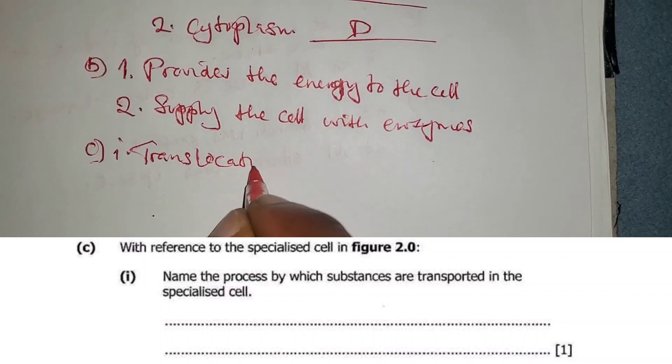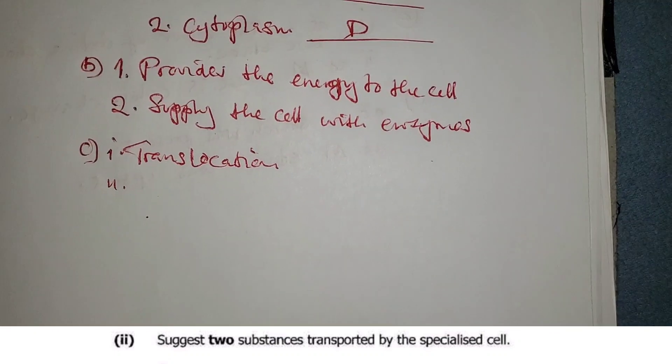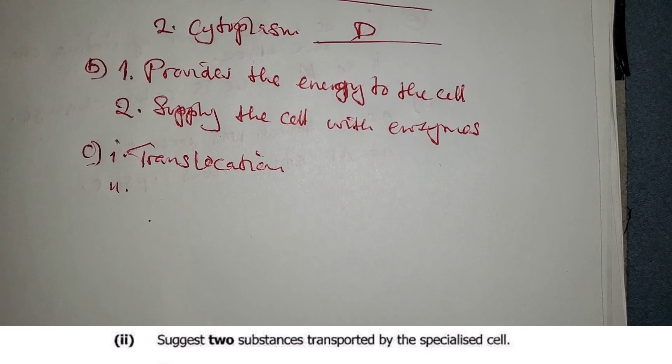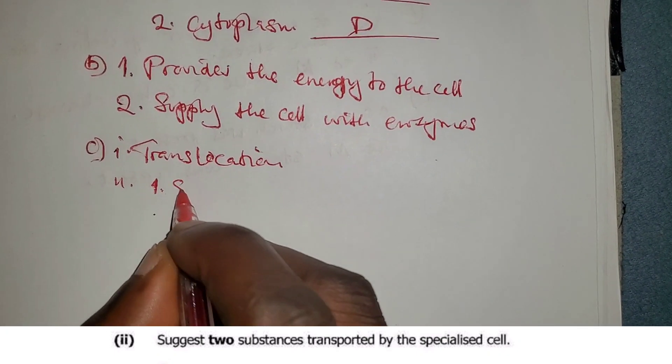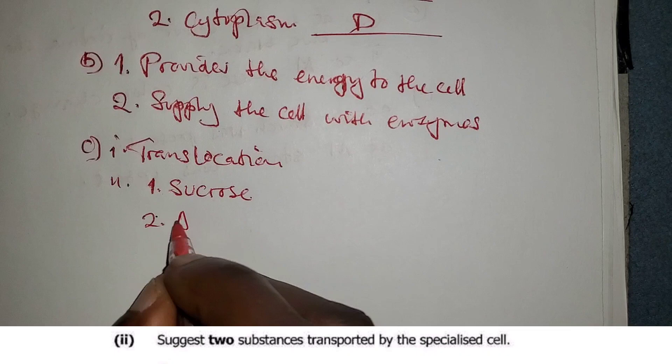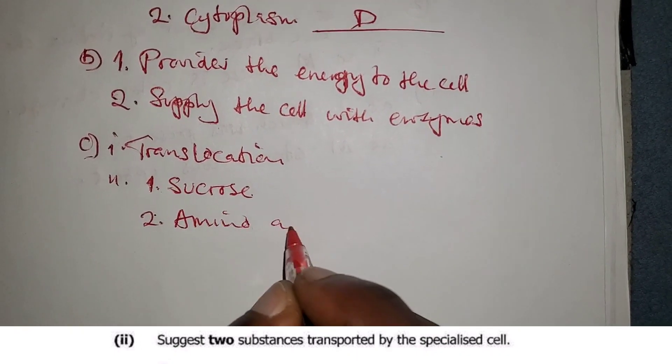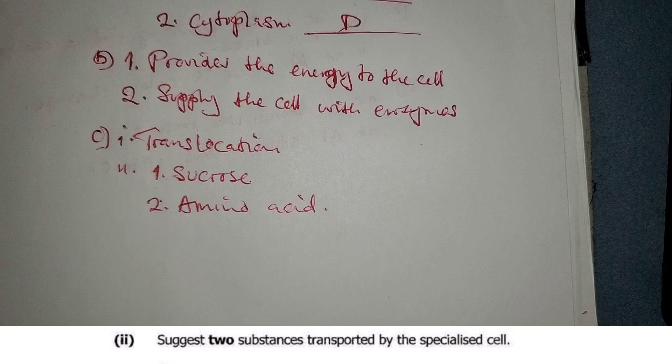Number two: Name two substances transported by the specialized cell. One is sucrose, and two is amino acids.